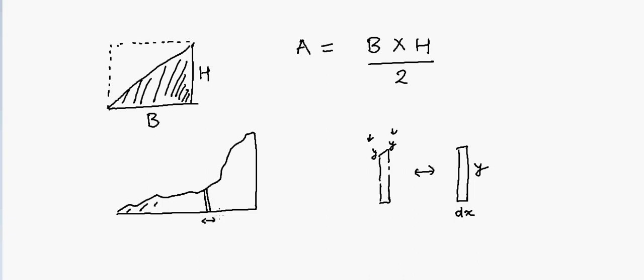Because the y is here and here are same, so this is y and this is dx. Why call it dx? Because this is a very small strip, a very small section. So now the area will be equal to y into dx, right? So this is the area.